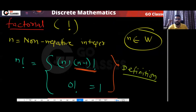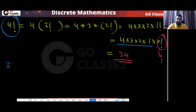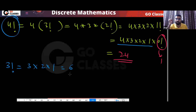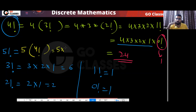This is the definition of n factorial, where n is a non-negative integer. n factorial means n multiplied by (n minus one) factorial, and zero factorial is equal to one. You can notice that four factorial is basically the multiplication from one to four. Three factorial is multiplication from one to three. Two factorial is two to one. One factorial is one. And zero factorial is one.